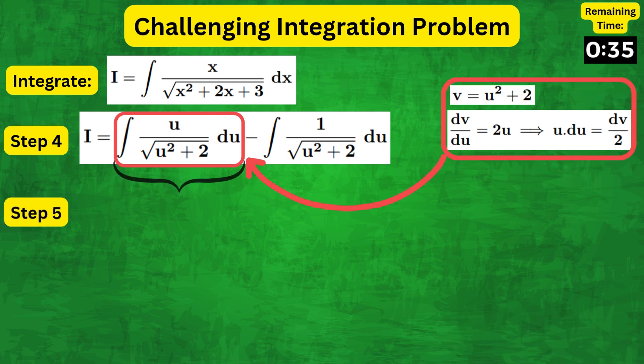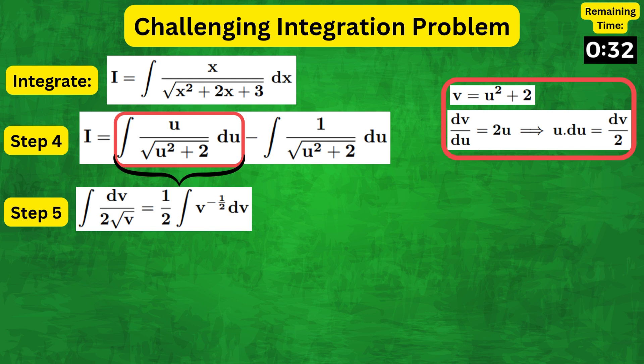Plugging these in, we get 1 half v to the minus 1 half. That integrates to v to the half, which is square root of u squared plus 2.